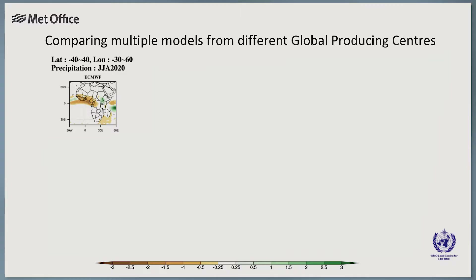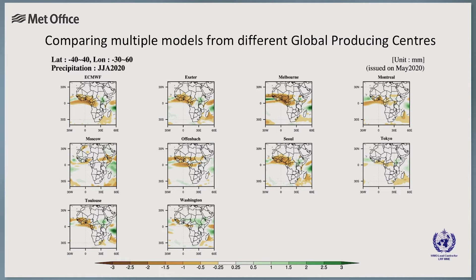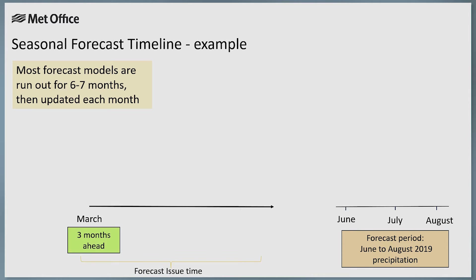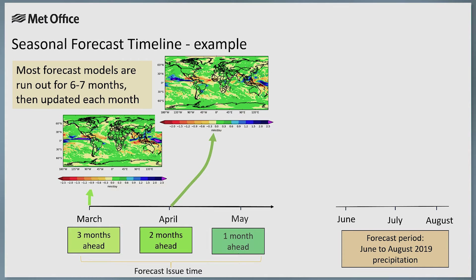With lots of different models and lots of different resolutions, how do you know which one to use? We talk about different ways to assess a model's performance in the next video. It's important not to rely on an individual model, but instead to look at the output from various models. There are online data portals which allow you to compare and combine multiple models, and we talk about these in the final video. Most centres run their models to cover the next six to seven months, and this is repeated each month. Therefore the seasonal forecast for the June, July and August season would first be available in March, updated in April and then again in May.